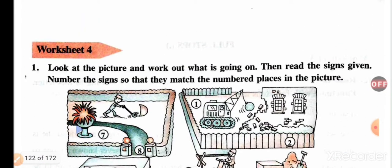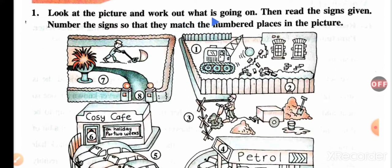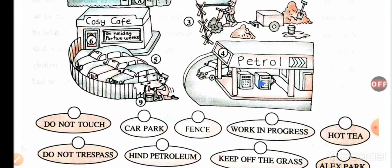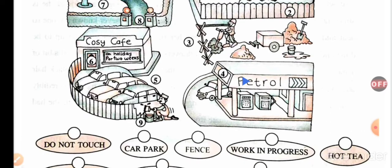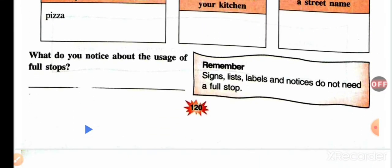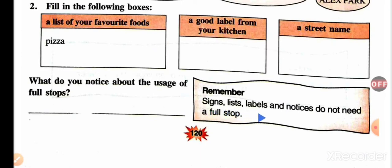Now look at the pictures and work out what is going on, then read the signs given and number the signs so that they match the numbered places in the picture. The signs include: Do Not Touch, Car Park, Fence, Work in Progress, Hot Tea, Do Not Trespass, Hint Petroleum, Keep Off the Grass, Alex Park. So here will be Car Park, here Hint Petroleum, here Work in Progress. You can also write a list of your favorite foods, a label from your kitchen, or a street name.